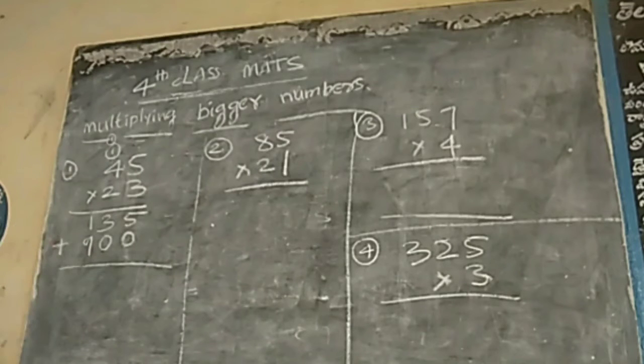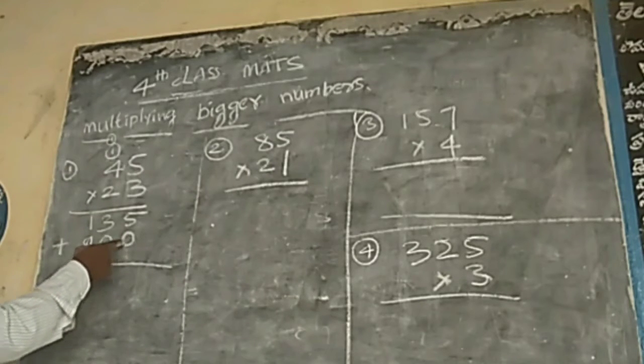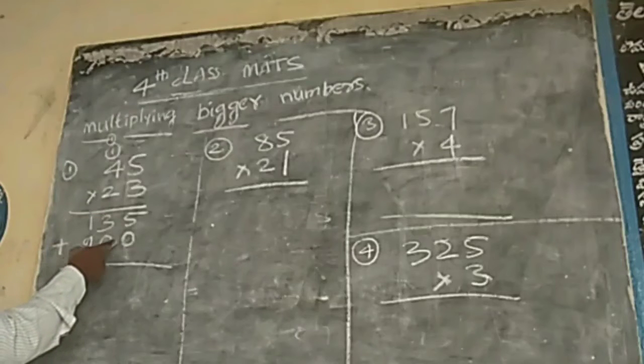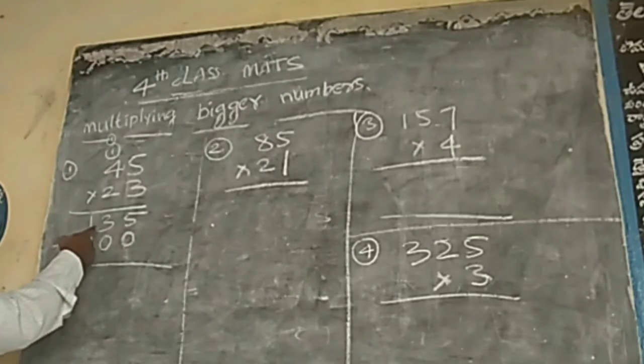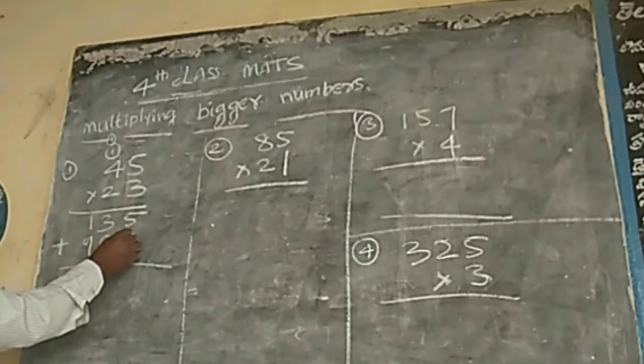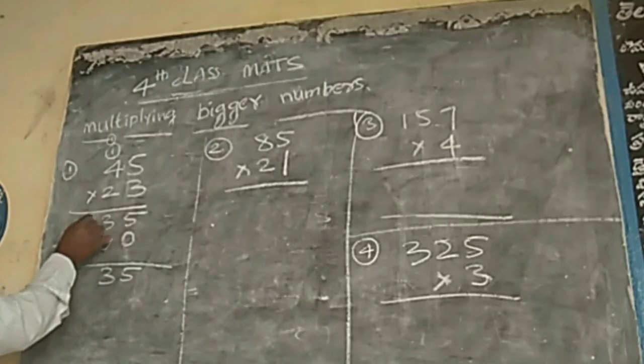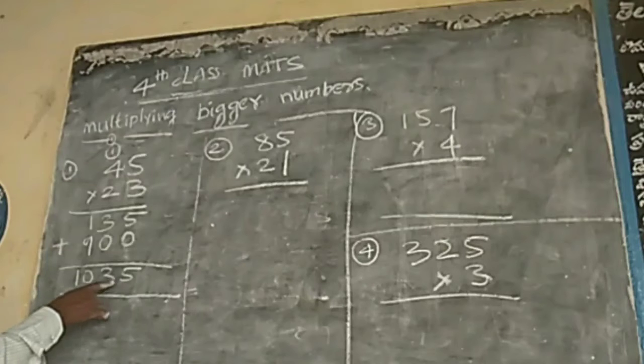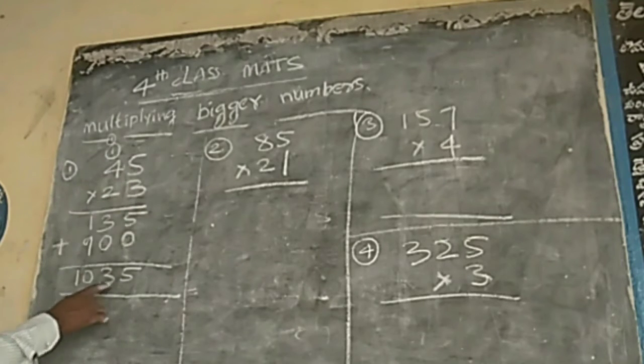Now, add. Multiply by 2 times. First one, multiply by 3. Second one, multiply by 2. So now, two big numbers are came. And add these. 5 plus 0, 5. 3 plus 0, 3. 9 plus 1, 10. How much came? 1,035. 45 multiplied by 23, 24. 1,035.